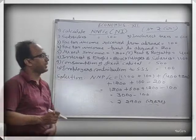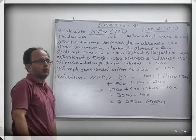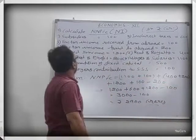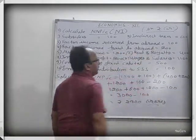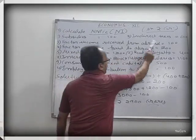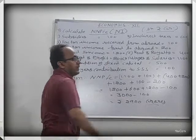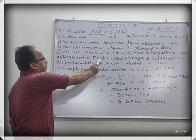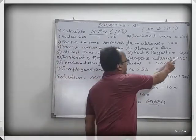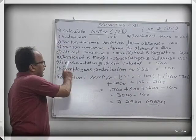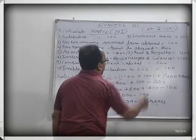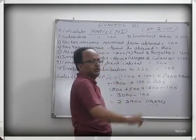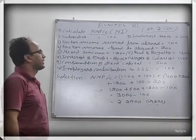In this portion, different items are given and all figures are in rupees crore. First is subsidies 100, indirect tax 600, factor income received from abroad 100, factor income paid to abroad 200, mixed income 1200, rent and royalty 400, interest and profit 200, wages and salaries 1100, consumption of fixed capital (depreciation) 500, and employers' contribution to social security scheme 100.